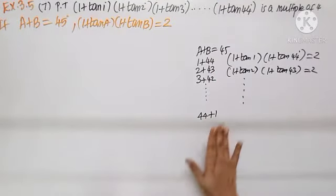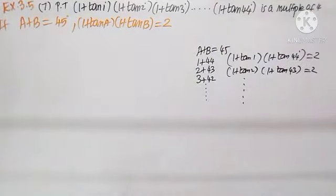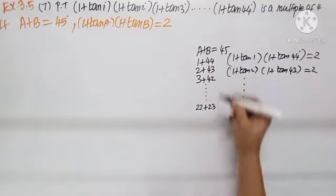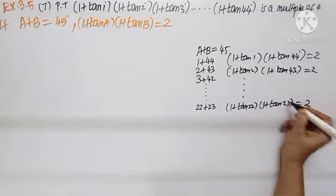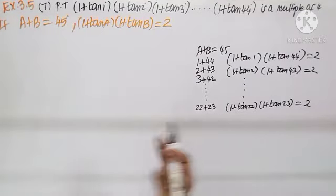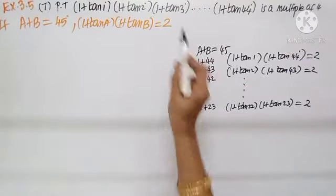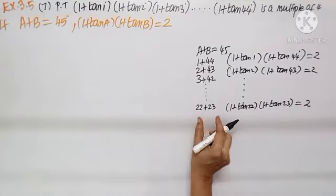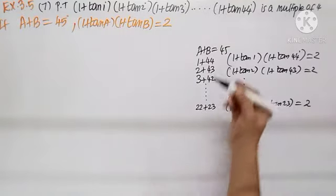We combine 3 and 42, and so on. The terms will keep pairing up — at the end the middle two will be 22 and 23, and 22 plus 23 is also 45. So 1 plus tan 22 into 1 plus tan 23 equals 2. There are 44 terms total. Combining them two at a time gives 22 pairs, and each pair gives 2. So how many 2's will come? 22 pairs, giving 2 power 22.